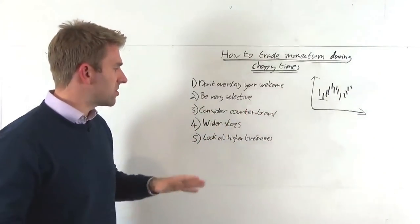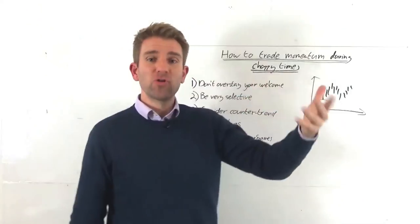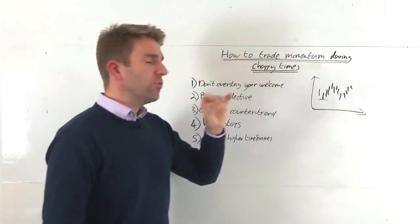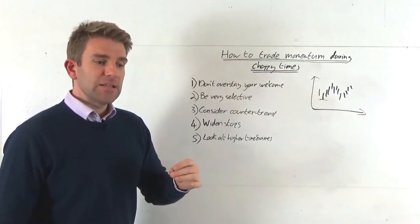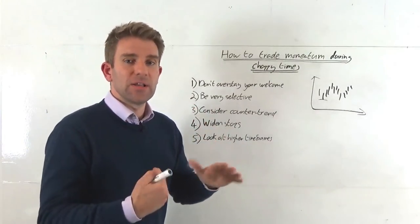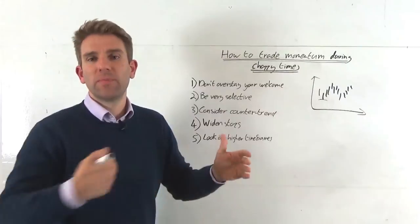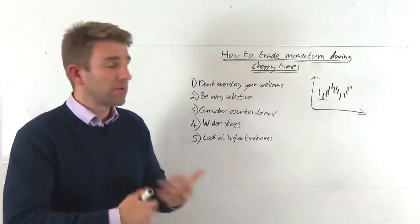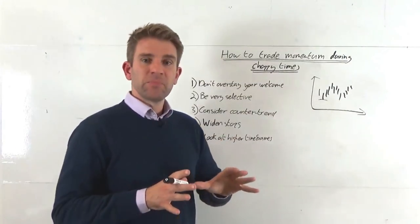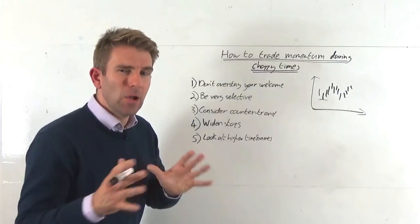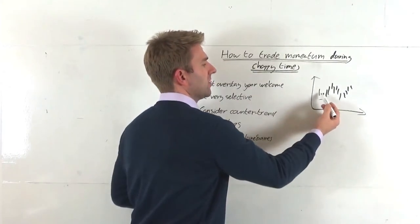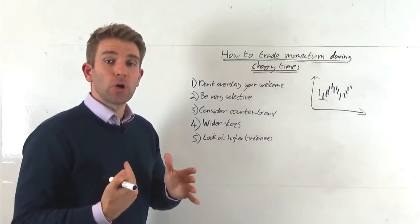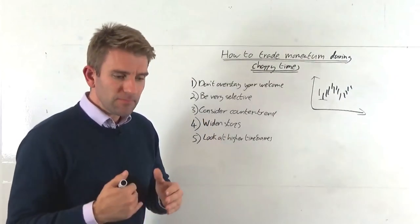Number four, widen stops. I'm contradicting myself slightly because in the beginning of the video I said keep the stops tight. What I mean by this is if you're trading momentum and you're looking for a little bit wider target, if you're looking for a scalp then keep those stops tight because you don't want to be letting it run really against you. You've just got a negative expectancy and negative risk reward. But if you're trading momentum and you're looking for a little bit longer term momentum, rather than like each individual candle you're looking over five or six candles.